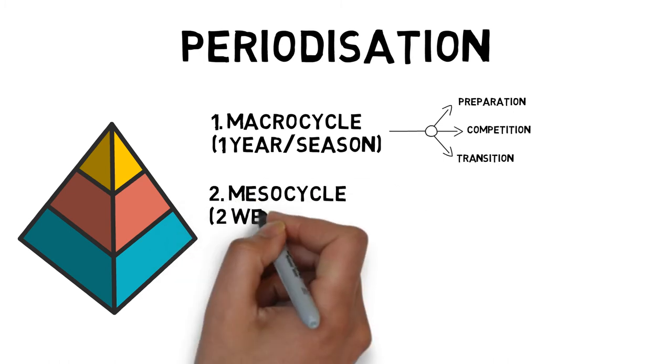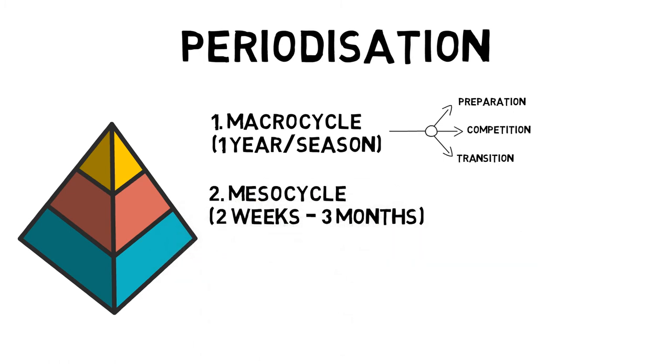Meso cycles are short term goals within a macro cycle, usually lasting between two weeks and three months. They may focus specifically on a component of training, such as muscular endurance.